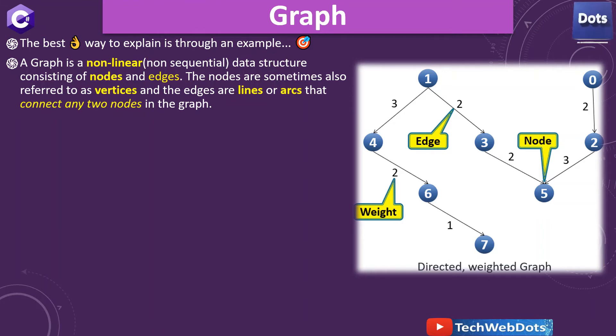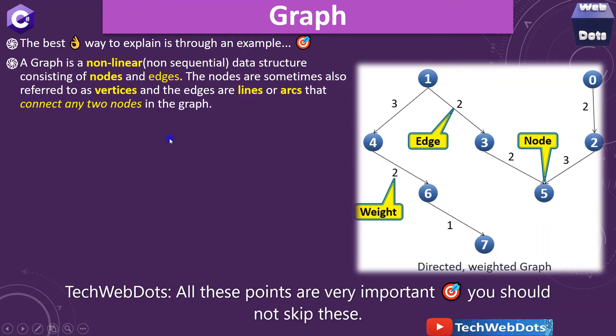When we say non-sequential, it means I am talking about graph and trees, because examples of sequential will be arrays, list, queues. Those are examples of linear, but now we are talking about only graph which is a non-sequential data structure consisting of nodes and edges. The nodes are also referred to as vertices, and the edges are lines or arcs that connect any two nodes. Yes, we can see there is an edge between node 1 and node 4 in the graph.